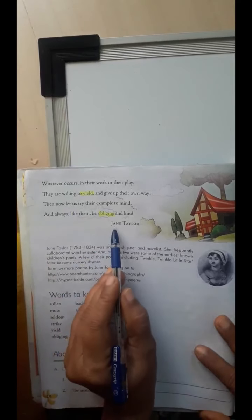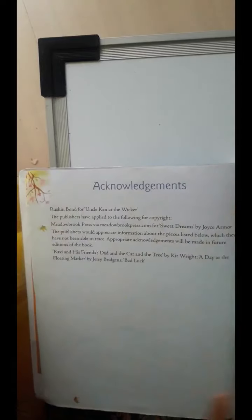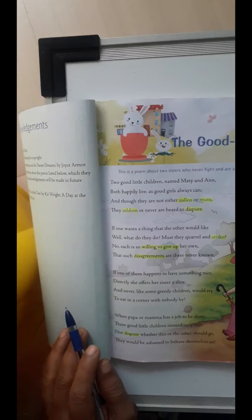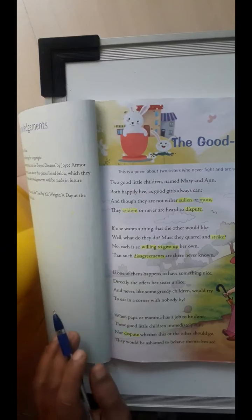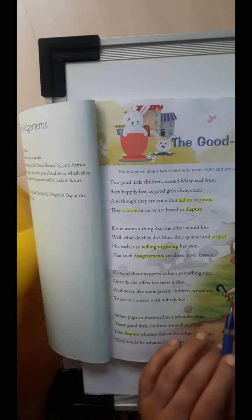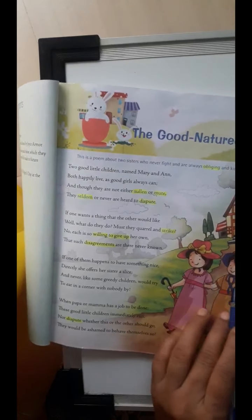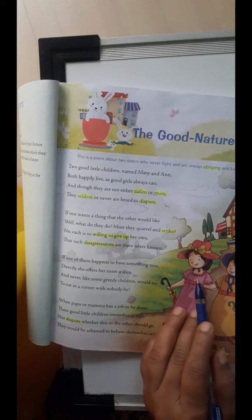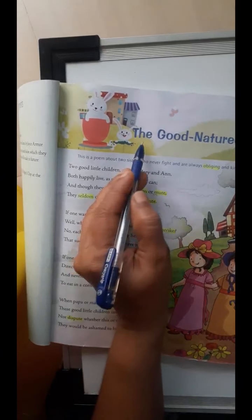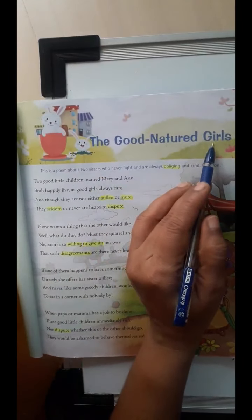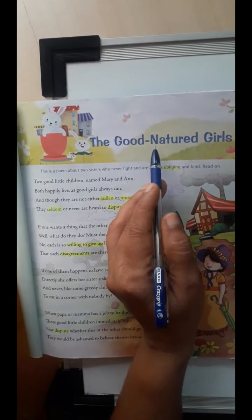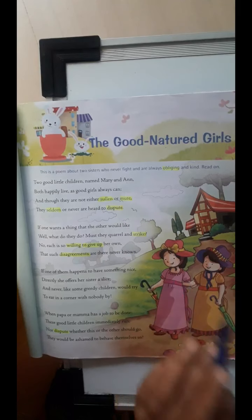This poem is written by Jane Taylor. It is a very nice poem written in very simple language — you can understand it. Let us start to understand the poem. The names of these two little sisters are Mary and Anne. Here is the title, The Good-Natured Girls. This title also suggests the well behavior of these two little sisters.